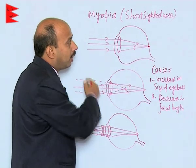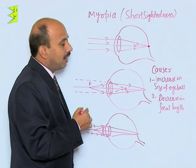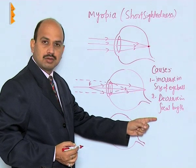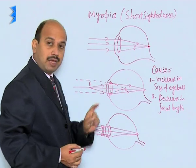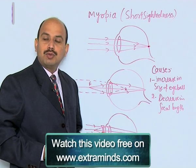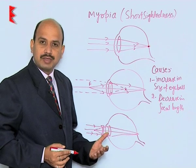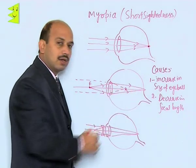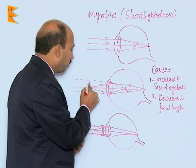But in a myopic eye, what happens is there is an increase in the size of the eyeball. Because of that, the distance between the retina and the lens increases, and there is a decrease in the focal length of the eye lens. Because of these two reasons — increase in the size of the eyeball and decrease in the focal length — if the object is at infinity, its image is formed in front of the retina. This means you cannot see objects at the far point, and their far point is no longer at infinity. If rays are coming from point f, they are formed on the retina, meaning the far point has shifted from infinity to f. So the far point has reduced.